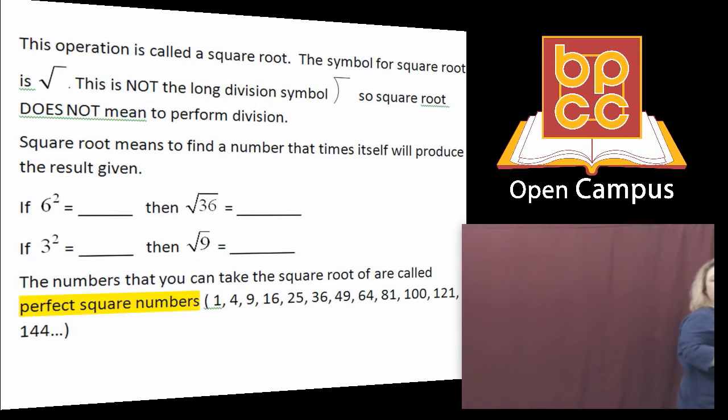When we have this, we have six squared. Six squared means six times six, which is 36. And the opposite of six squared would be the square root of 36. So when you say the square root of 36, that means what number multiplied to itself will give you 36. And that would be 6 times 6 gives me that 36. So the square root of 36 is 6.